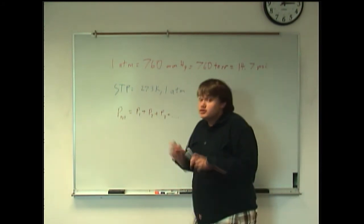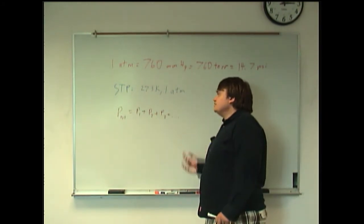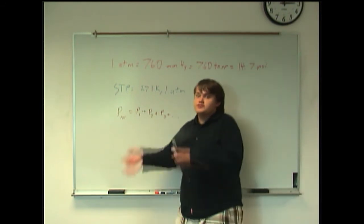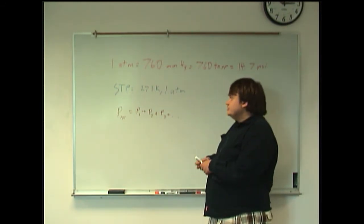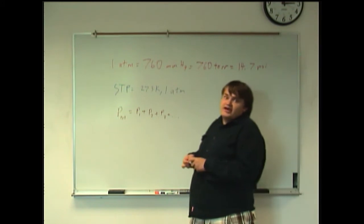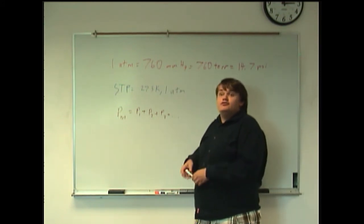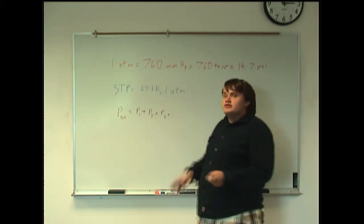Well, the total pressure is just equal to the sum of the individual pressures of each gas. Conversely, if you want to find the partial pressure of one gas, if you knew the total pressure and the pressures of the other gases, you could just subtract the other gases from the total pressure, and then you'd just be left with the partial pressure you're concerned with.